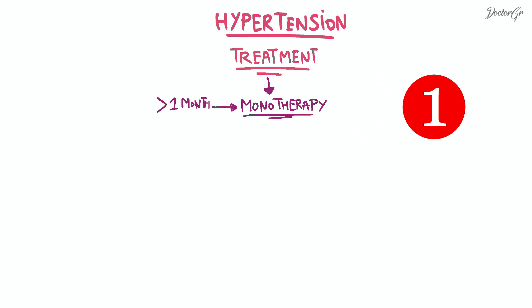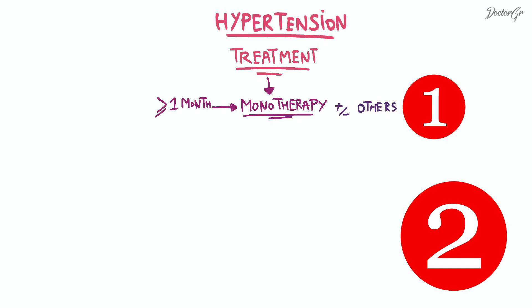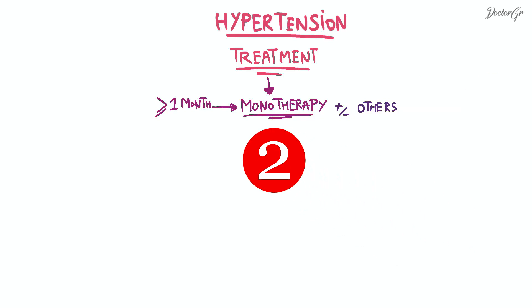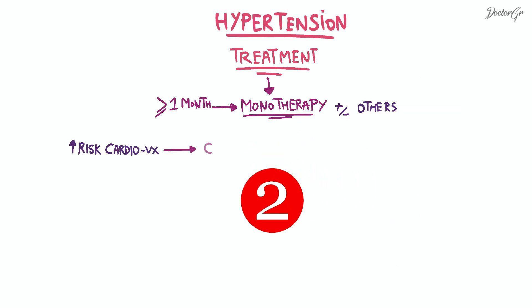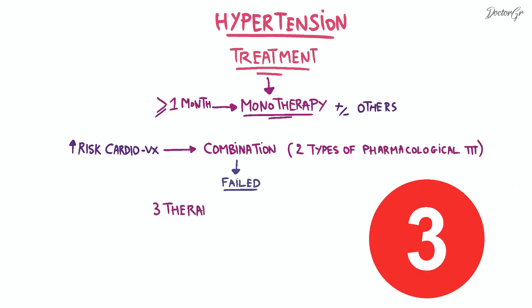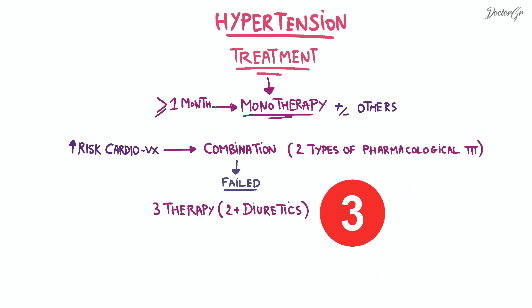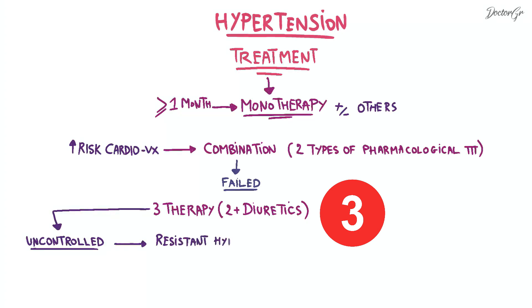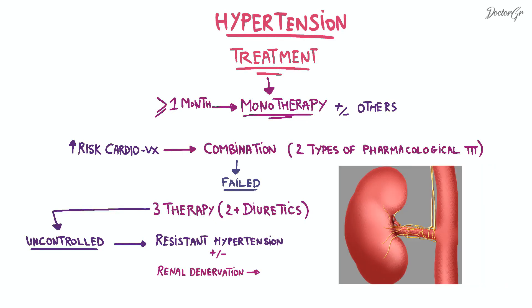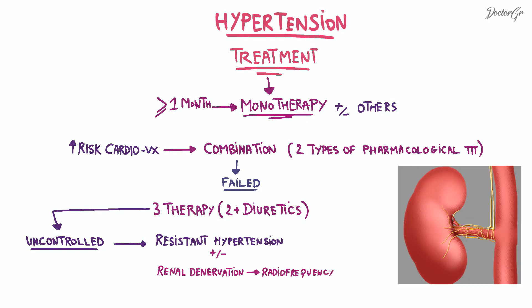If blood pressure remains elevated after one month, combination therapy might be considered; however, it can be initiated early in patients with high cardiovascular risk. If combination therapy fails, triple therapy with at least one diuretic is recommended. If hypertension remains uncontrolled despite triple therapy, it is considered resistant hypertension, and renal denervation using radiofrequency may be considered.